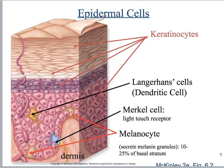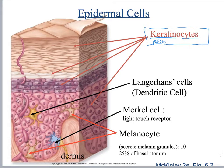We're going to focus on the epidermis and the types of cells found there. The primary cell is the keratinocyte — 'keratin' refers to a protein in the cell, and '-cyte' means cell.